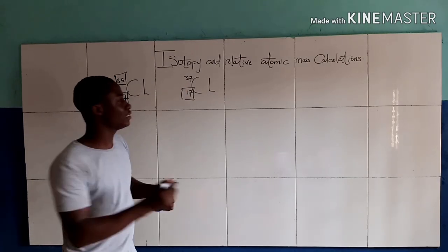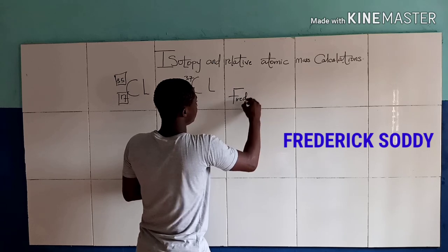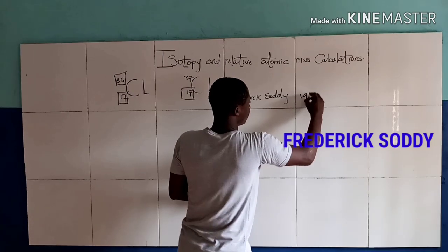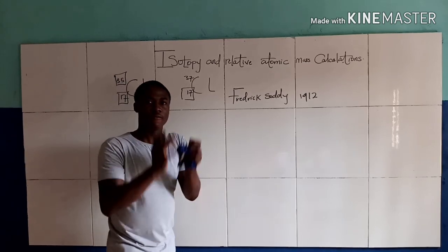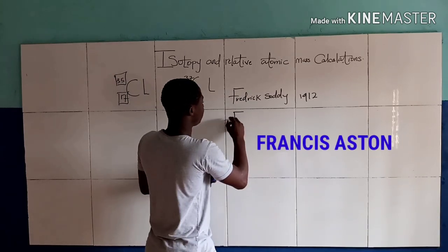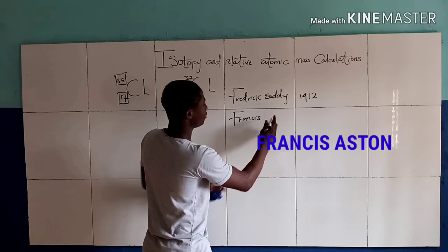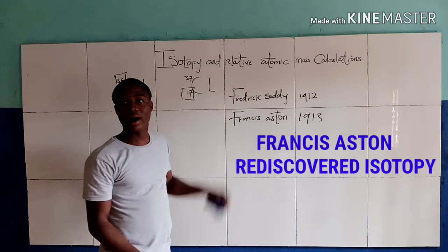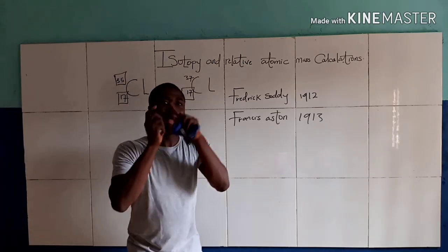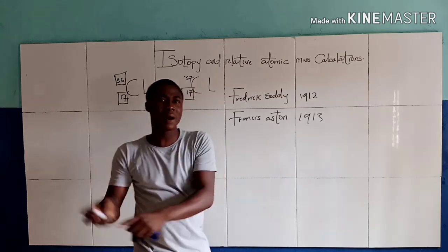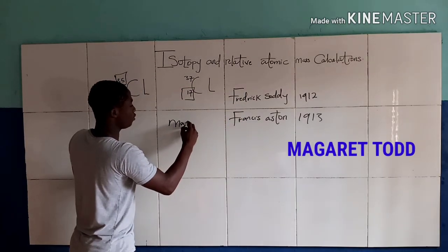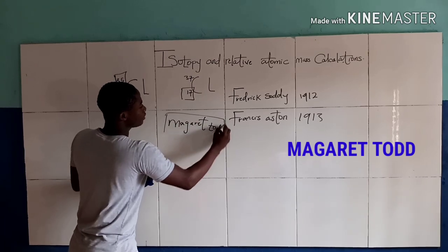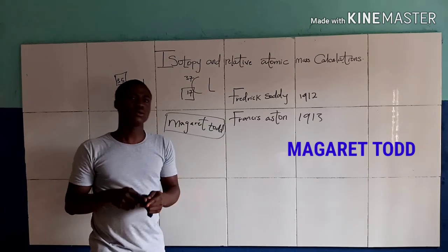Isotopy was discovered by a man called Frederick Soddy in the year 1912. But a man called Francis Aston, in the year 1913, rediscovered isotopy. The word isotope was coined by a woman called Margaret Todd.